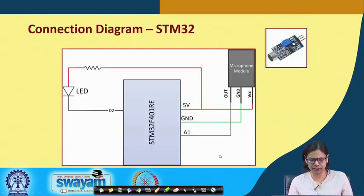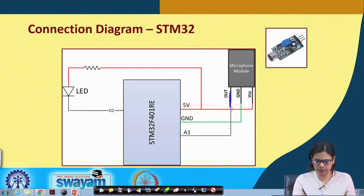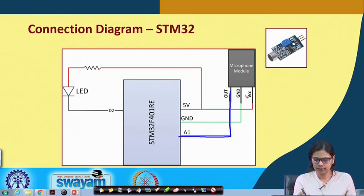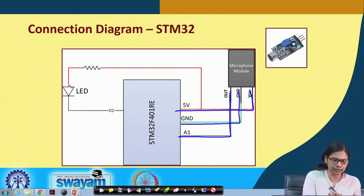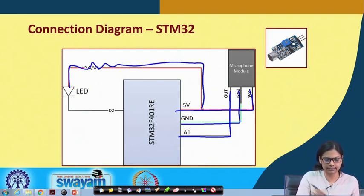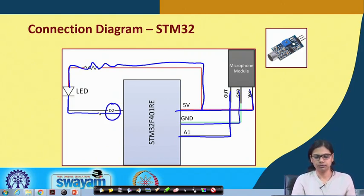This is the connection diagram. The output pin is connected to analog pin A1, ground is connected to ground, VCC is connected to 5 V, and for the LED the anode is connected through a resistance to VCC and the cathode is connected to pin D2.